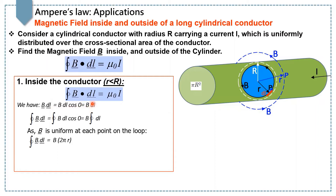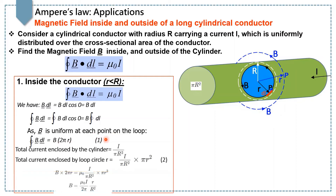Since cos(0°) equals 1, we get B dl. Taking the closed integral of dl gives the circumference of this Amperian loop, which is 2πr. Since the magnetic field is uniform at each point on this Amperian loop, we keep B outside the integral. So finally we get B into 2πr. This is our equation number 1.